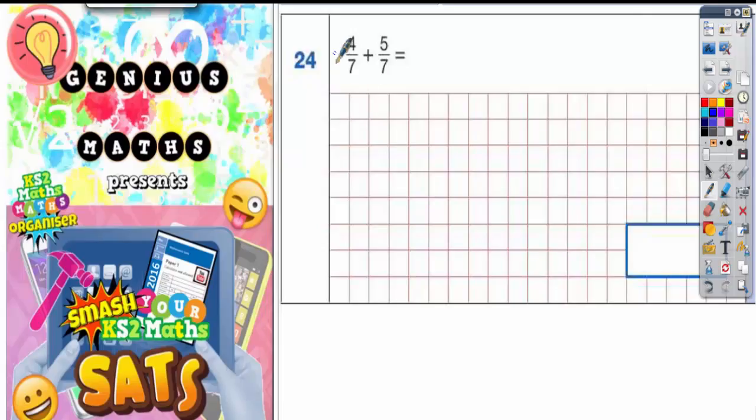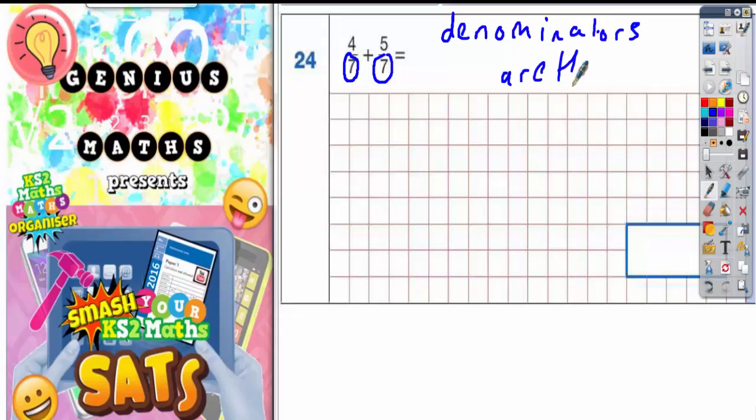Question 24: 4 sevenths add 5 sevenths. Now this one is actually very easy because the numbers at the bottom of the fractions, which we should be calling the denominators, are the same. Now sometimes you get fractions where the denominators are not the same and those ones are more difficult. We'll come to those later.